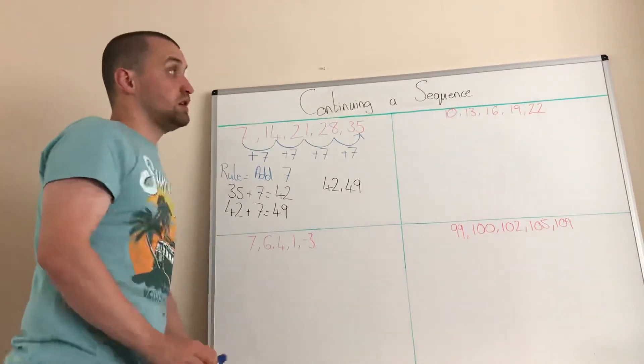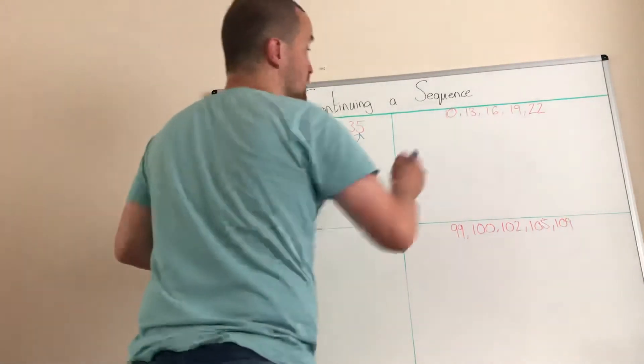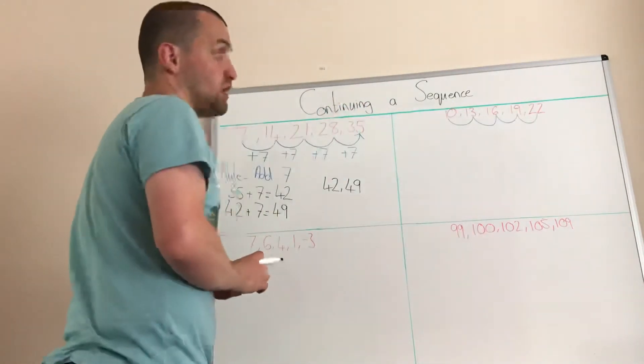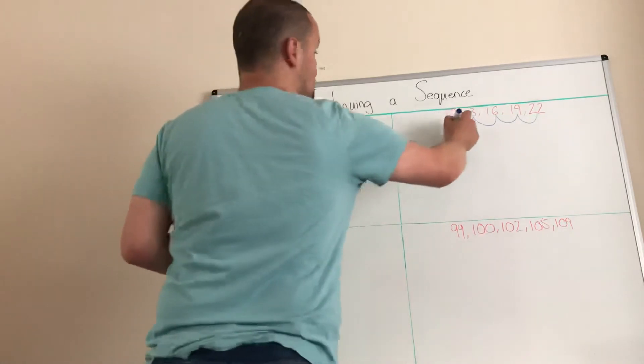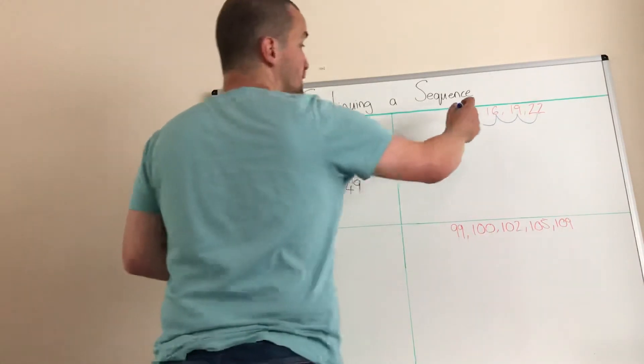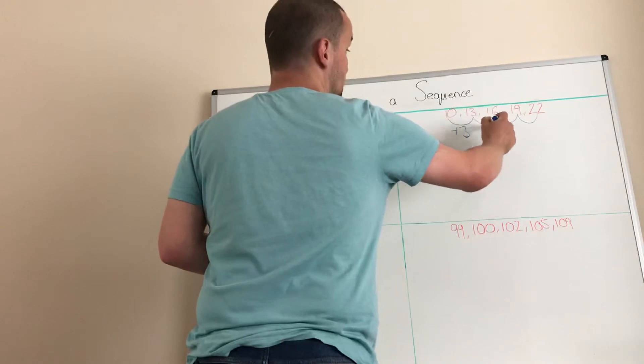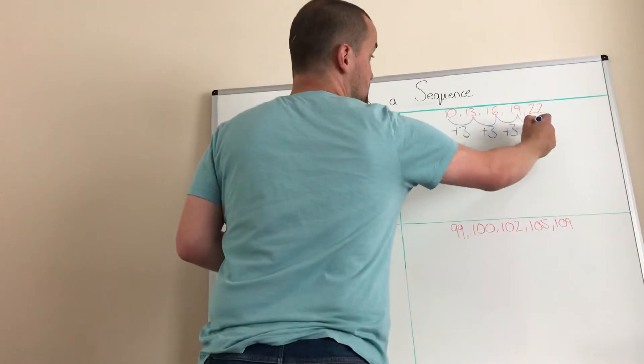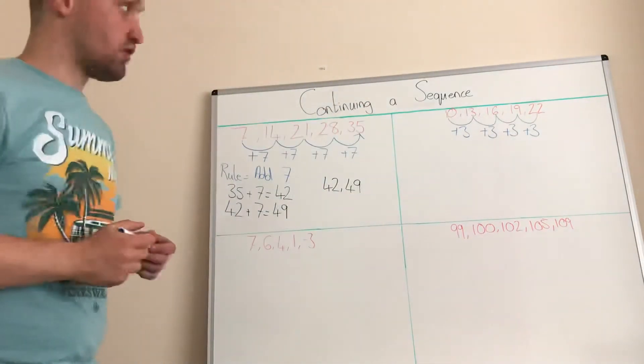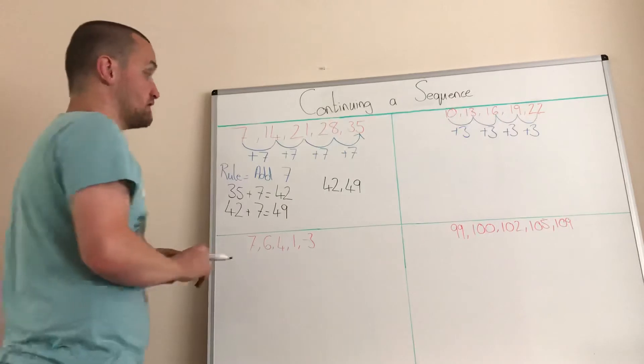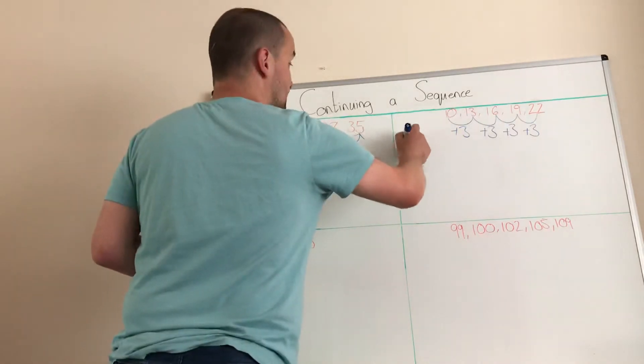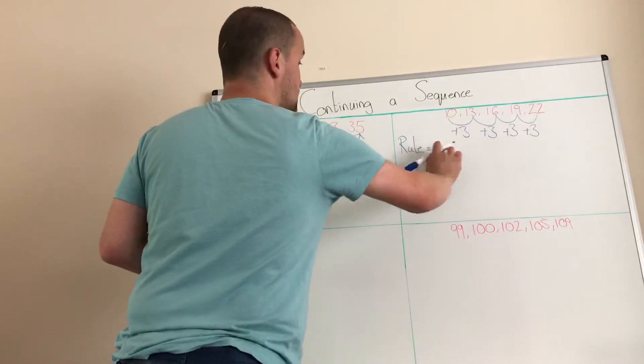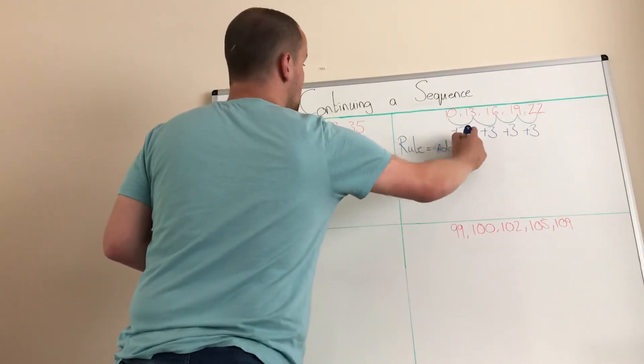Right, sequence two. We're going to look over here. So 10, 13, 16, 19, 22. To get from 10 to 13, add three. 13 to 16, add three. 16 to 19, add three. 19 to 22 is add three. Now those differences are all the same, so the rule for that sequence is add three.